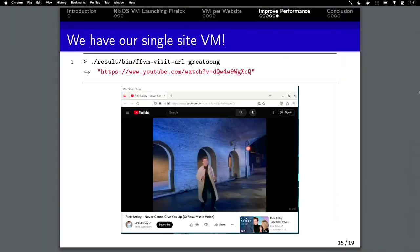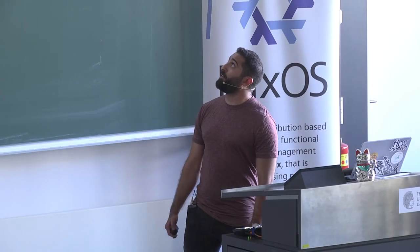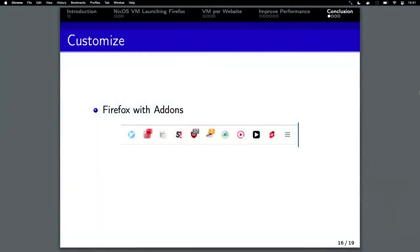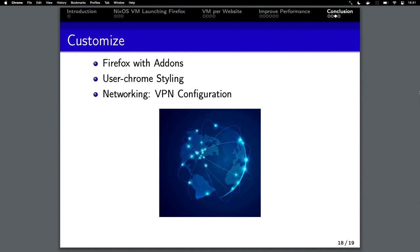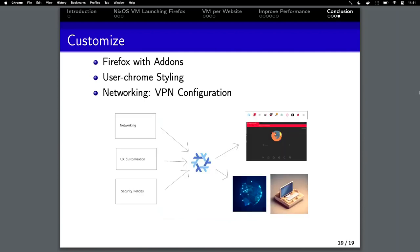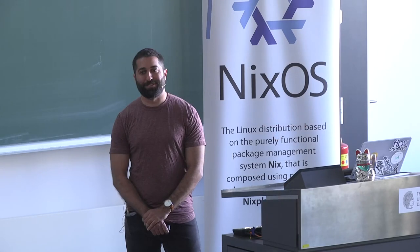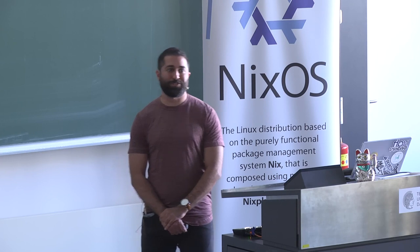And there we have it — a script we can invoke at runtime where we pass in a name and a URL to visit, and we get our Firefox VM that visits the website. All of this is pretty convenient and not too bad to do. From here, there's a lot of things you can do on top of this: given that we have a NixOS VM running, you can customize the Firefox instance by providing add-ons, rice your Firefox instance if you please, configure networking which is conveniently available through NixOS, or reuse an existing module you may have defined. I hope this talk has shown you there's a lot of power and customization available to us as NixOS users. Thank you.